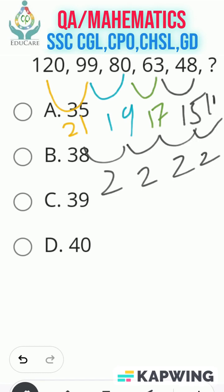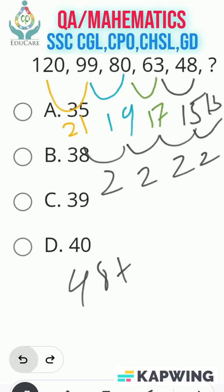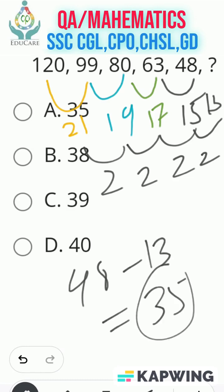So next also, the difference decreases by 2, meaning the difference between 48 and the next number would be 13. So if we subtract 13 from 48, we get our answer: 35. Option A is the right answer.